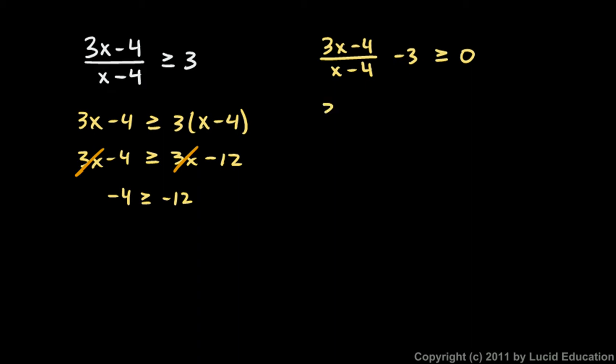In other words, keep this first term the same, 3x minus 4 over x minus 4, but instead of just saying minus 3, say 3 times x minus 4 over x minus 4, and clearly that is just the same thing as the 3 right there.